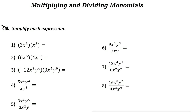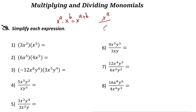Multiplying and dividing monomials: when you multiply or divide monomials, you need to multiply or divide their coefficients, then use the exponent rules. The multiplication rule is x to the power of a times x to the power of b equals x to the power of a plus b. For division, x to the power of a over x to the power of b equals x to the power of a minus b.